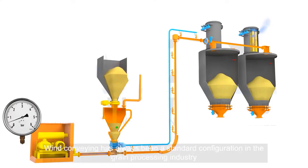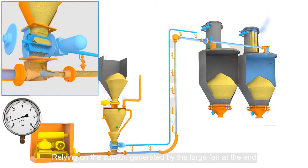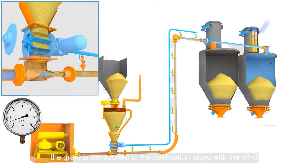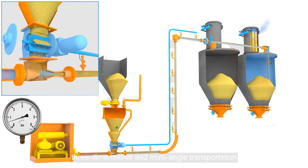Wind Conveyor: Wind conveying has always been a standard configuration in the grain processing industry, relying on the suction generated by the large fan at the end. The grain is transported to the destination along with the wind. It can realize long-distance, three-dimensional, and multi-angle transportation.